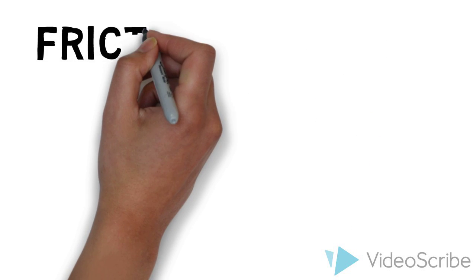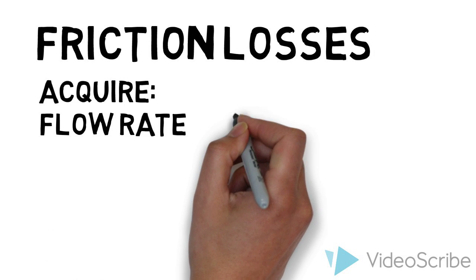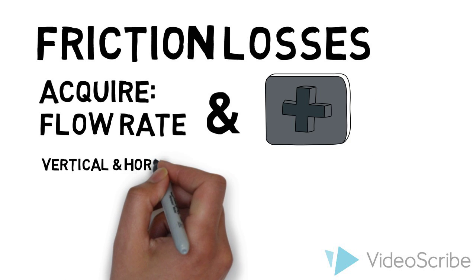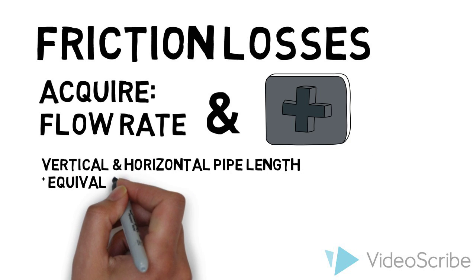To determine the friction losses, first acquire your flow rate in GPM. Once you know that, you can add the vertical and horizontal piping lengths of your system to the equivalent length of fittings in feet.